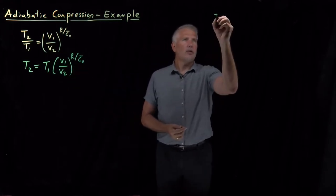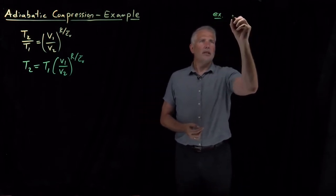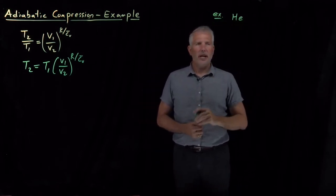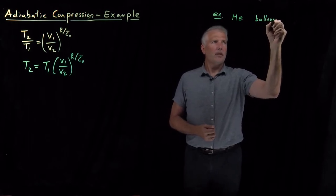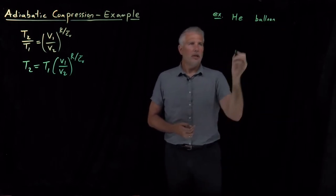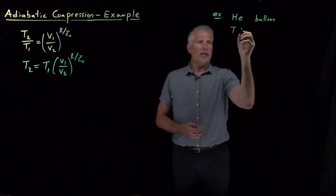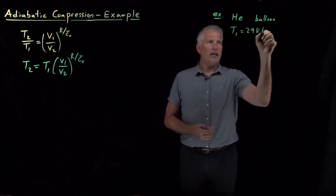For a concrete example, let's say I've got an ideal gas. Let's say I've got some helium in a balloon. Initially, let's say at room temperature, initial temperature at 298 Kelvin.